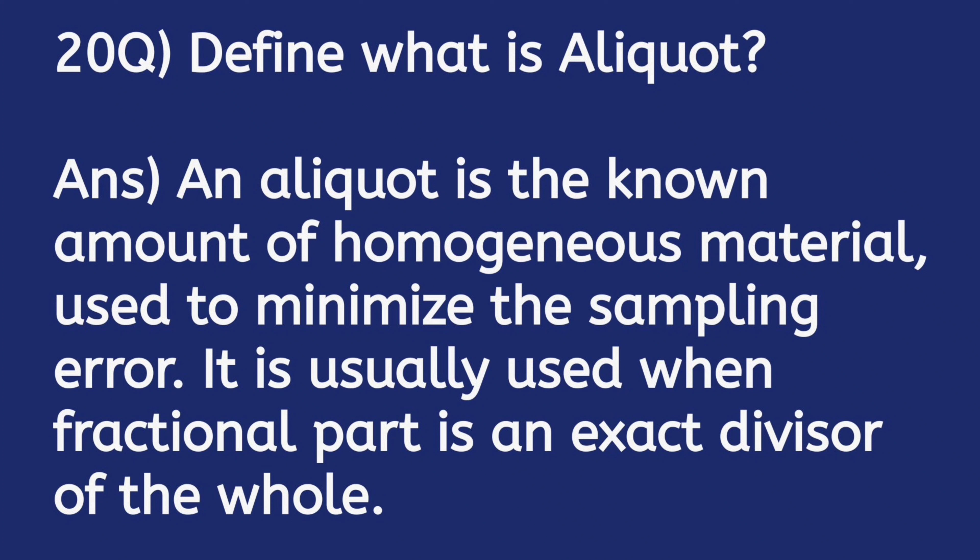What is an aliquot? An aliquot is a known amount of homogeneous material used to minimize sampling error. It is usually used when the fractional part is an exact divisor of the whole.